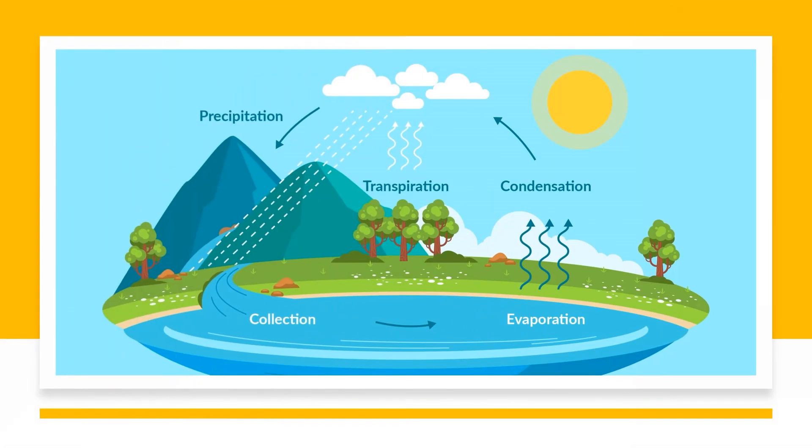To begin, let's look at the basics of the water cycle. At its core, the water cycle is a continuous process that involves the movement of water from the surface of the earth to the atmosphere and back again. This process is driven by the sun's energy, which heats the earth's surface and causes water to evaporate from bodies of water, plants, and soil. This water vapor then rises into the atmosphere and condenses into clouds, where it eventually falls back to earth as precipitation.